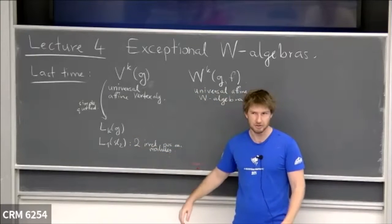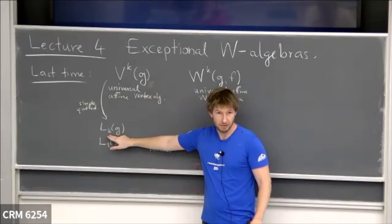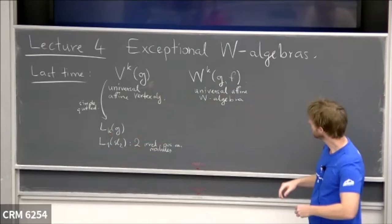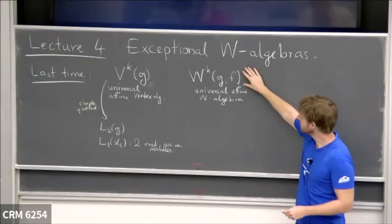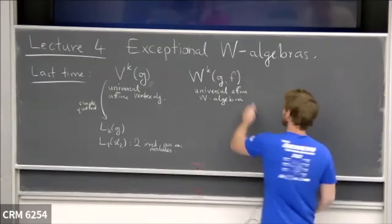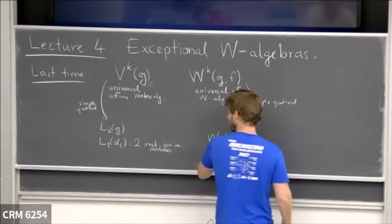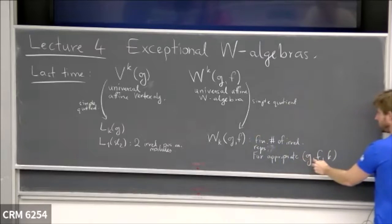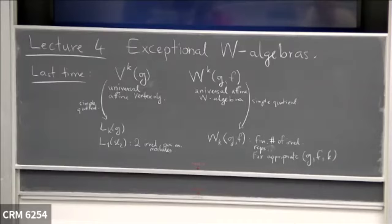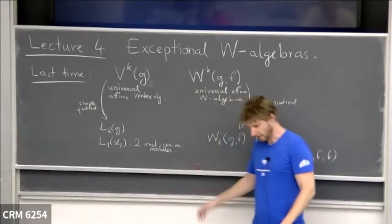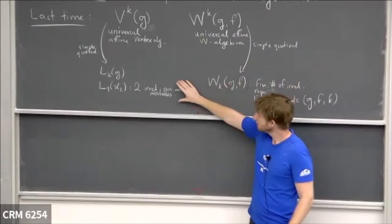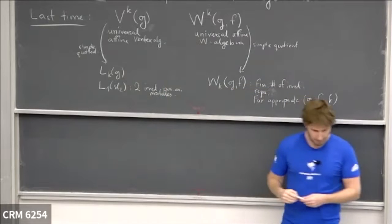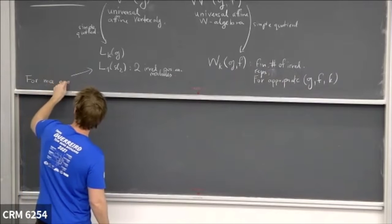This gives a very small category of representations. What happens depends very sensitively on the level — this was a positive integer level, but more generally something nice happens for admissible levels. The universal W-algebra also has many representations, but going down to an appropriate quotient depends on which g, f, and k we take. In particular, for this class of vertex algebras the category of representations has a lot of structure — it's a modular tensor category for nice enough vertex algebras.